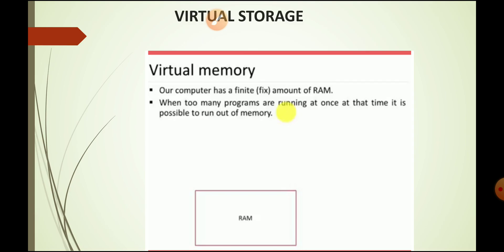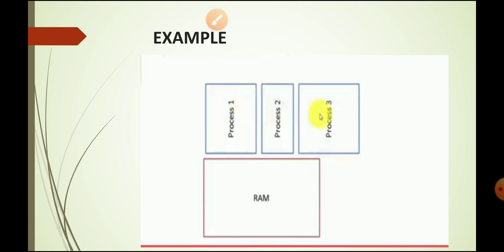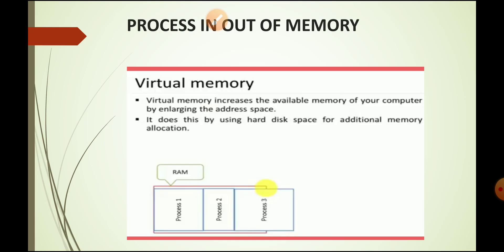For example, suppose we have three processes — process one, process two, and process three — and we have 2GB of RAM. We want to execute these three processes concurrently. Combined, they need 3.5GB of memory, but we only have 2GB, so the third process cannot be entirely loaded into memory. Half of process three runs out of memory and does not get sufficient space.